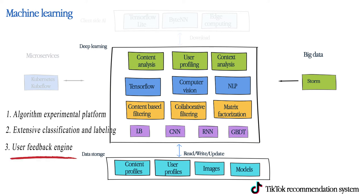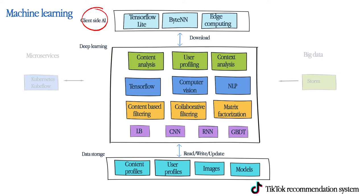The third is the user feedback engine. It updates the models after retrieving feedback in multiple iterations, and ultimately improves the predictions and recommendations. Some of the artificial intelligence work has been moved to the client side, including real-time training, modeling, and reasoning in smaller scale performed on the devices.